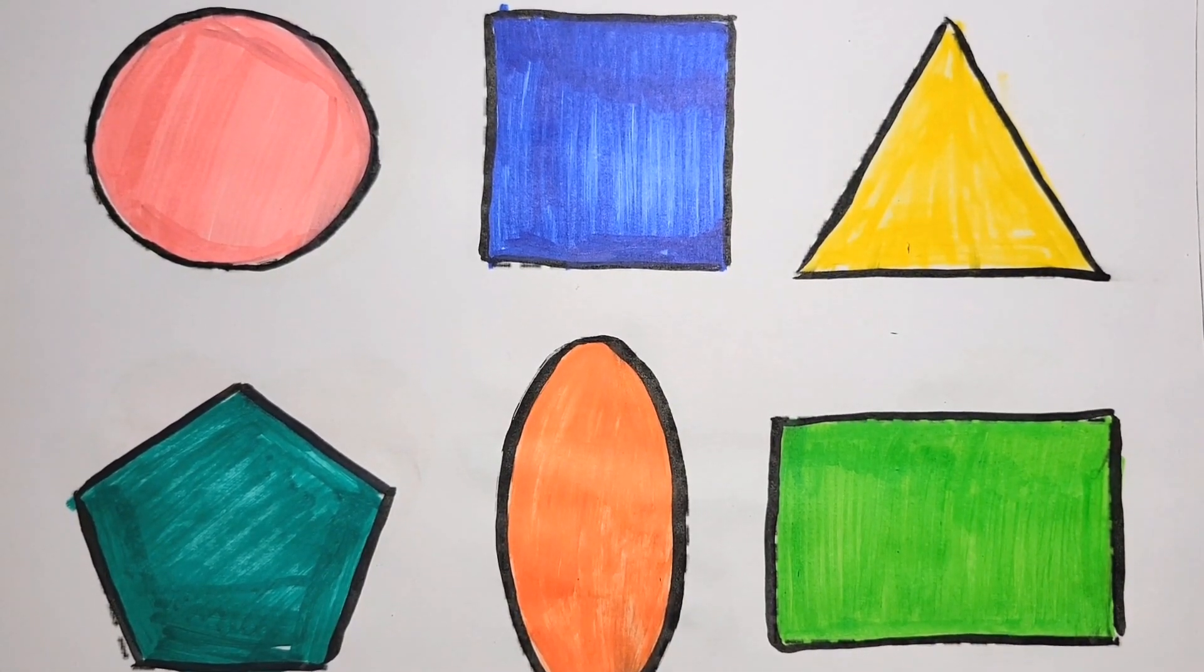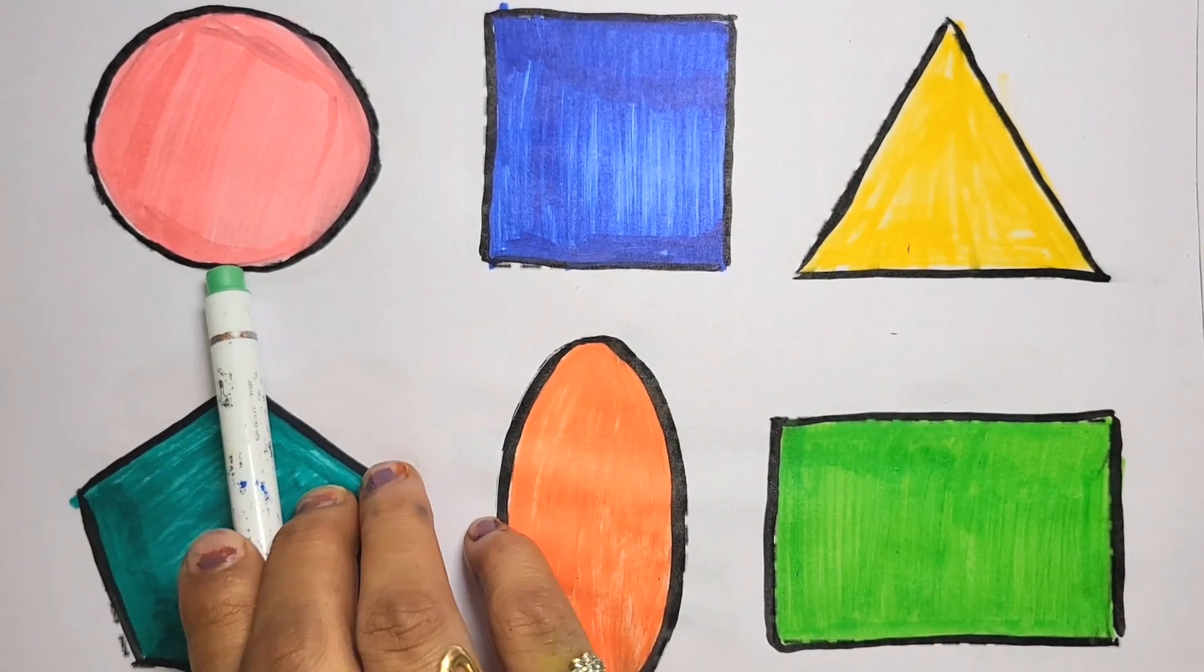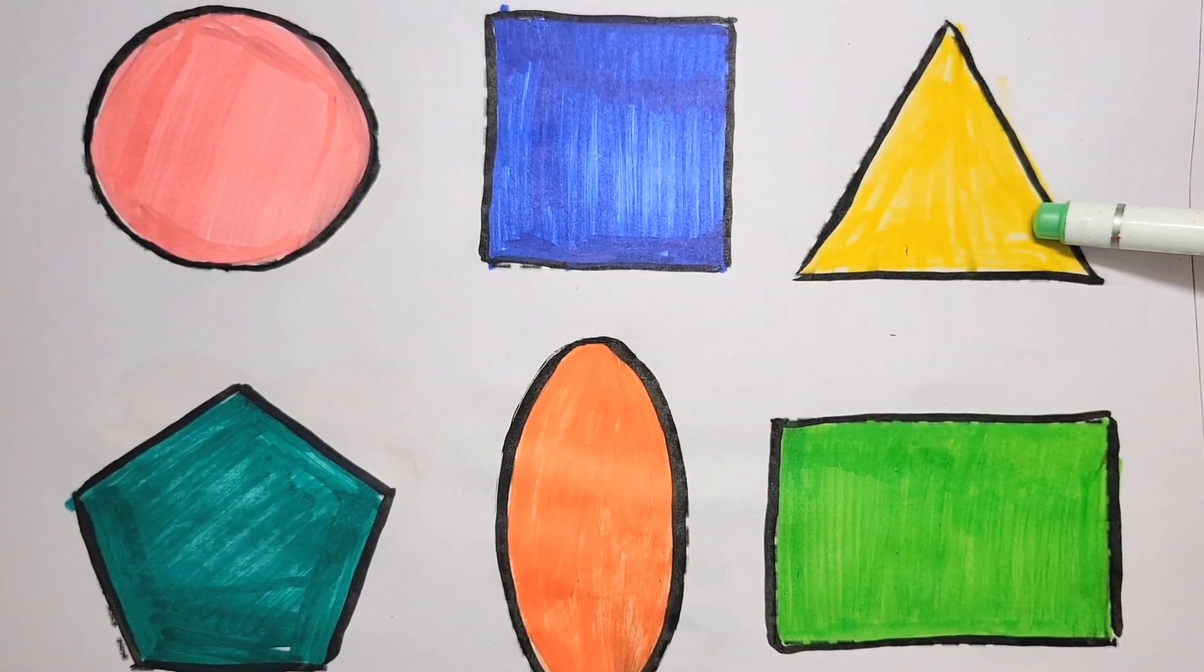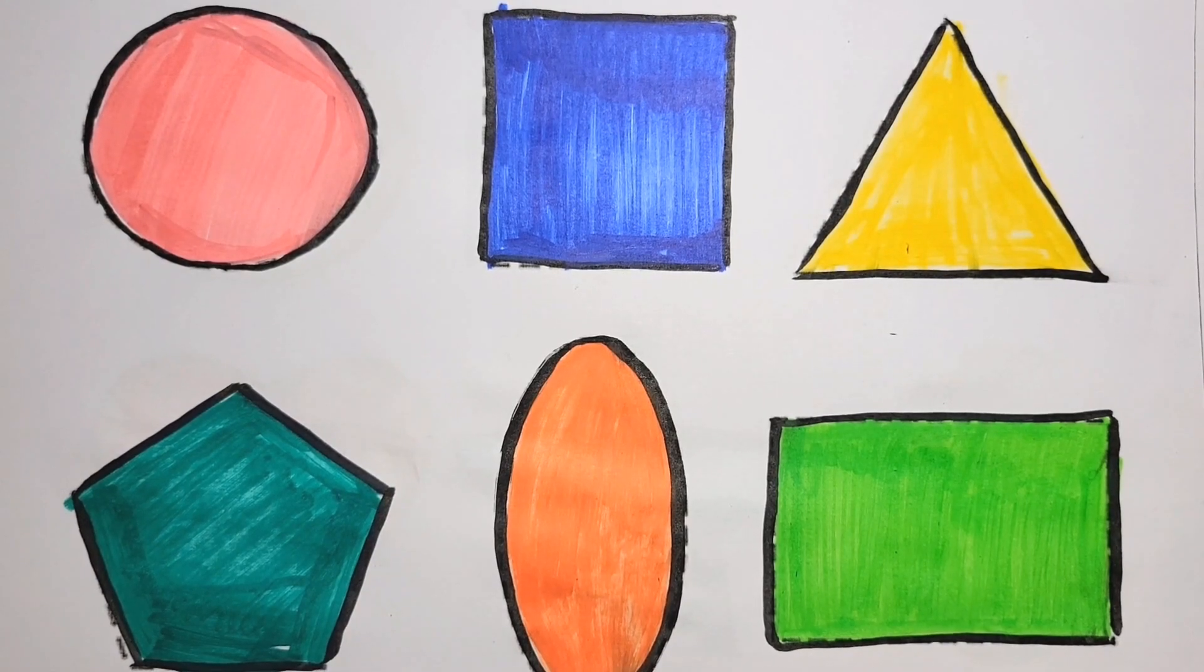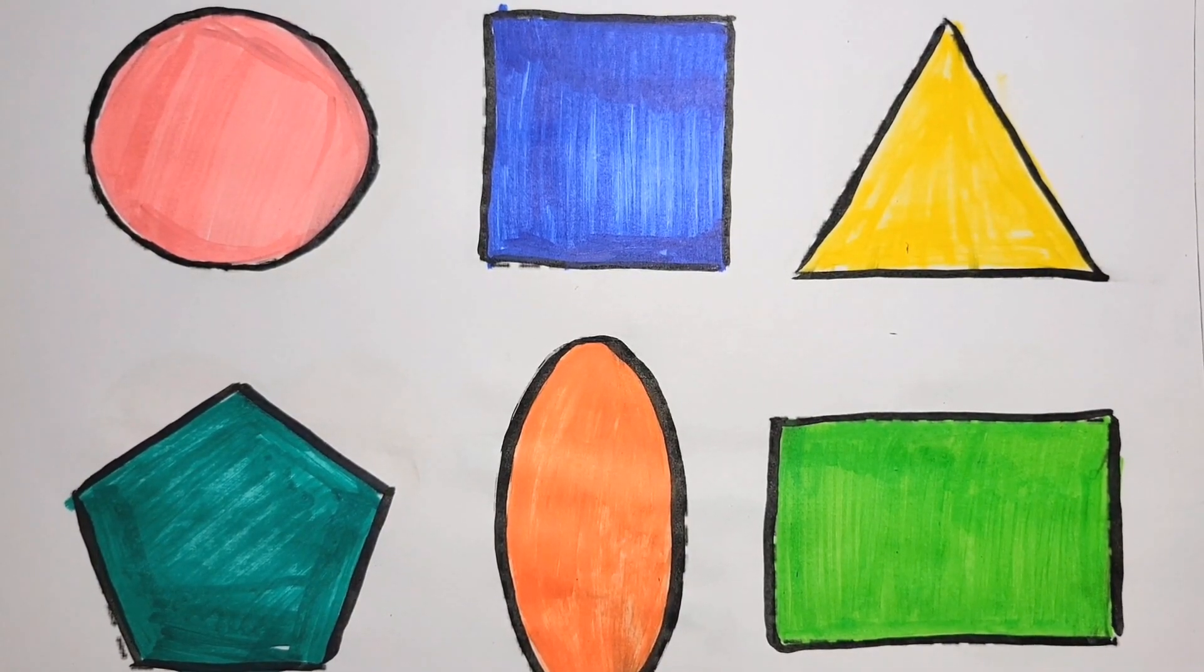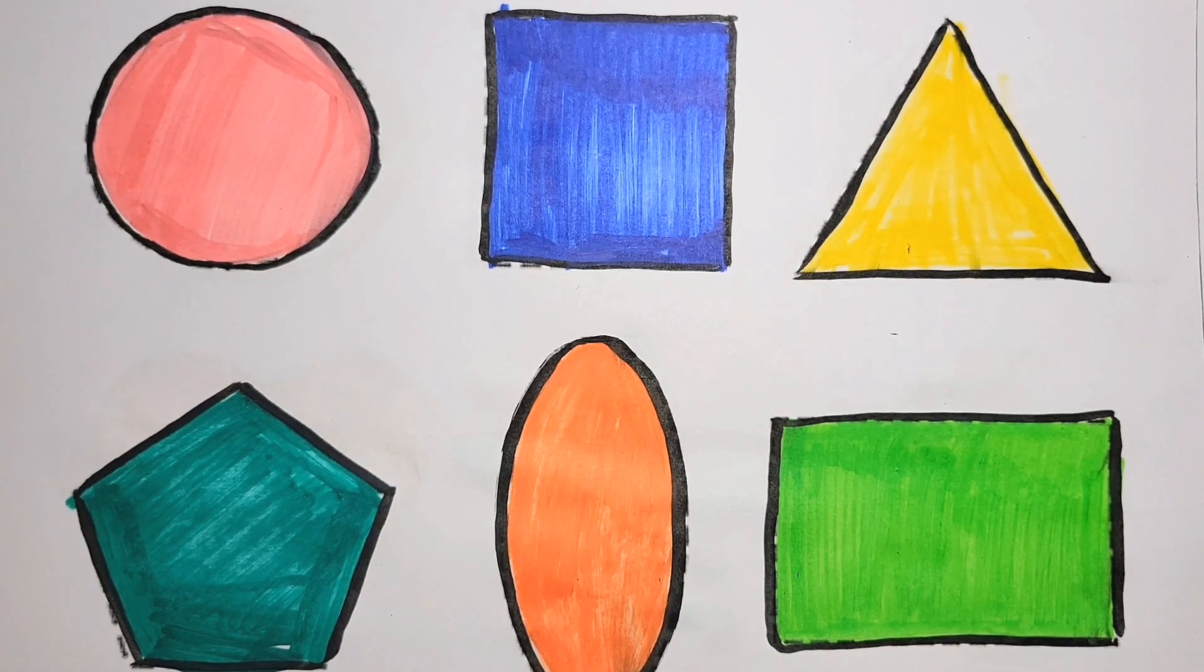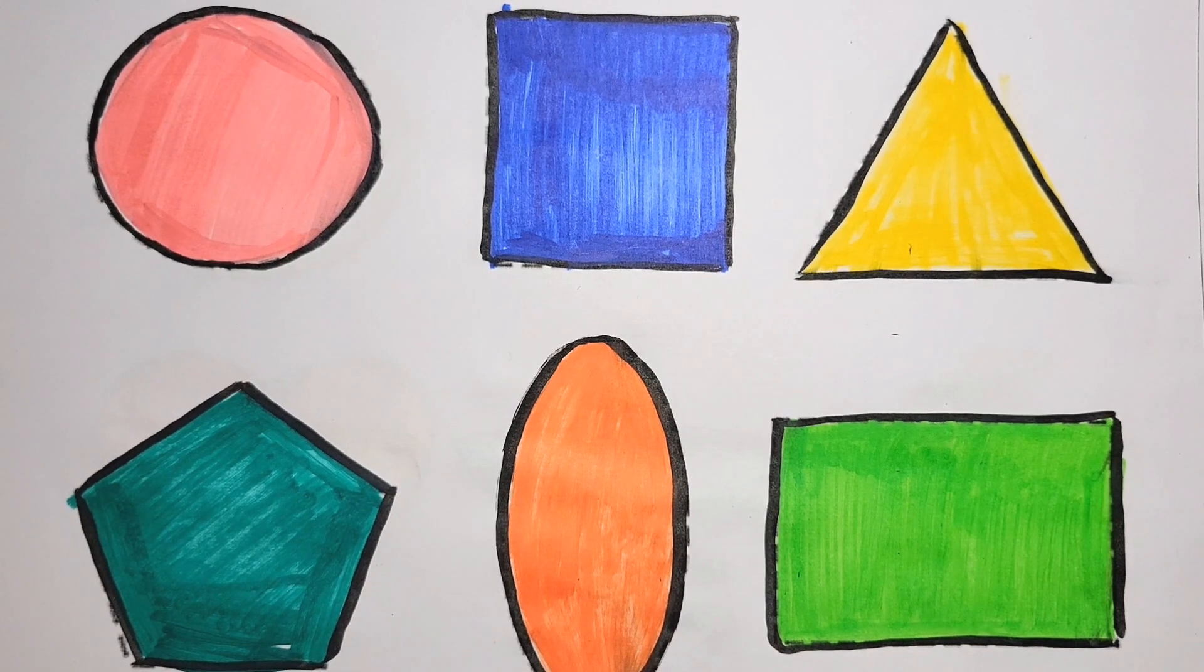Guys, shapes in different colors. Pink color circle, blue color square, yellow color triangle, green color pentagon, orange color oval, parrot green color rectangle. Kids please like my video and subscribe my channel. Bye bye guys, see you next video.